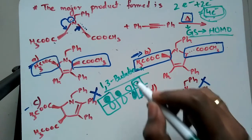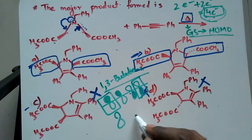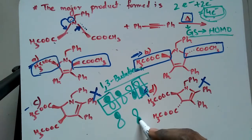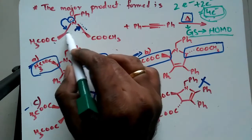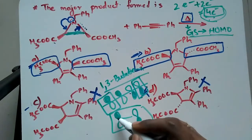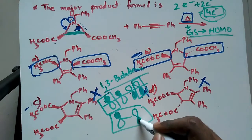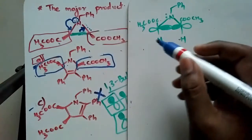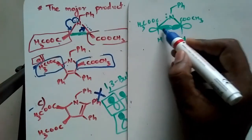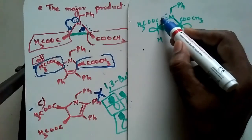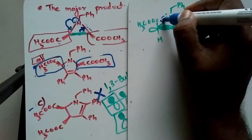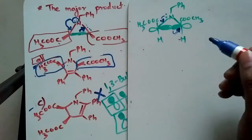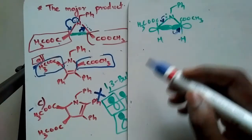We are concerned only about the end lobes. The end lobes look like this: one positive phase above and another positive phase below. So when you open up the ring, the lobe should be looking like this. I am drawing the lobes here — this lone pair of electrons falls here forming a double bond, and this bond falls here as a lone pair of electrons.